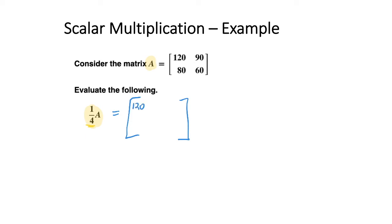We'll have 120 multiplied by one quarter, 90 multiplied by one quarter, 80 multiplied by one quarter, and 60 multiplied by one quarter.